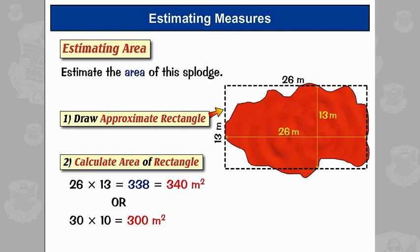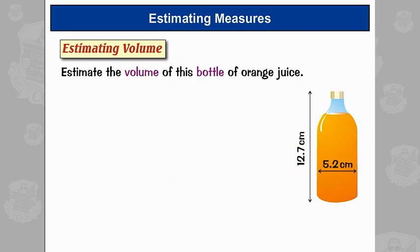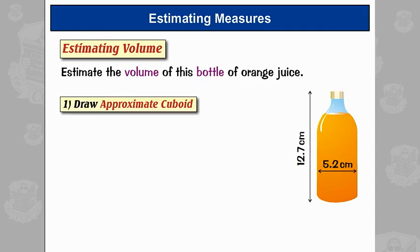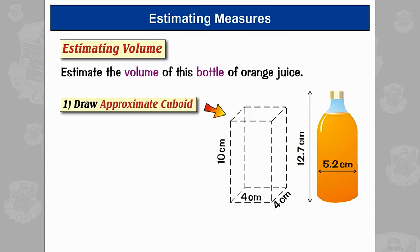Now, wherever height and area go, you can be sure that volume will follow. Estimating volume is a lot like estimating area, except this time I need to draw a cuboid instead of a rectangle to approximate the volume. So I could draw a cuboid with a base of 5.2 centimetres and a height of 12.7 centimetres. However, the top of the bottle goes in a bit, and it's a cylinder, so I'll make the cuboid a bit shorter and narrower to allow for that. Here it is.